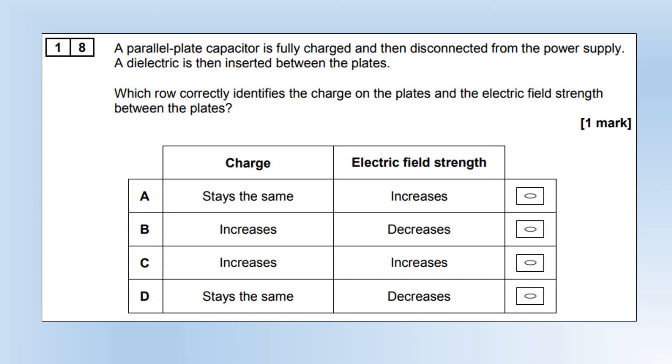Parallel plate capacitor is fully charged and then disconnected from the power supply. A dielectric is then inserted between the plates. Which row correctly identifies the charge on the plates and the electric field strength between the plates? Normally the relative permittivity is 1 if there's no dielectric. If we put a dielectric in, it becomes greater than 1. We've increased the capacitance of our capacitor. If we increase the capacitance, but we've still got the same number of charges on it because it's disconnected, that means the potential difference has to decrease. If the potential difference decreases, the field strength decreases. We're going to end up with option D.